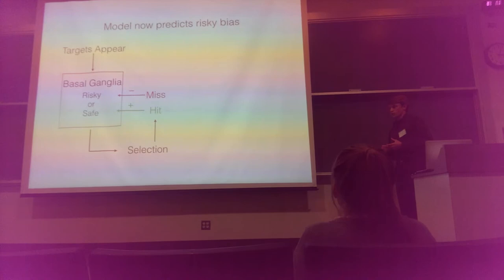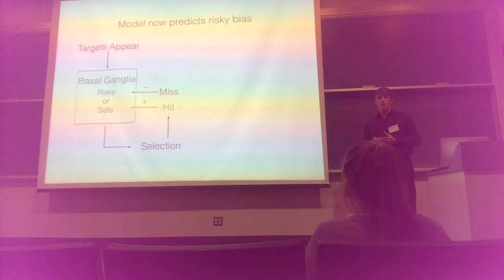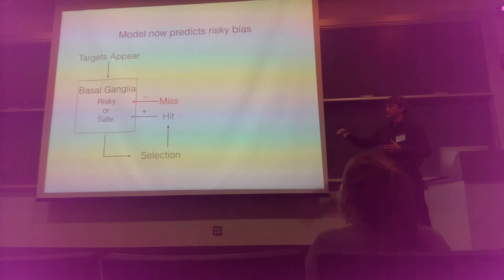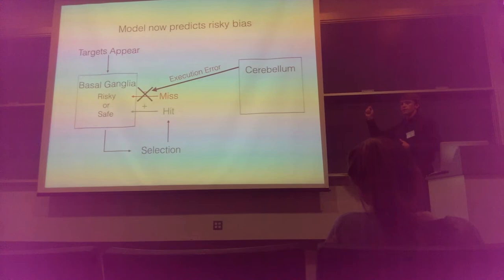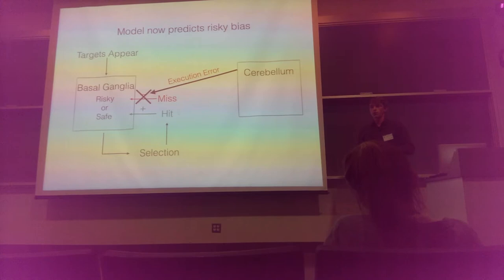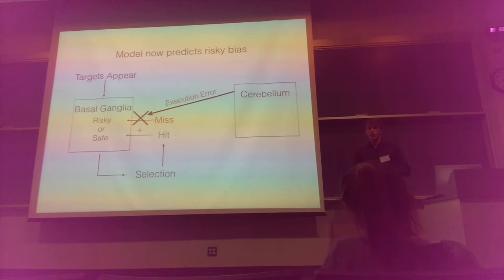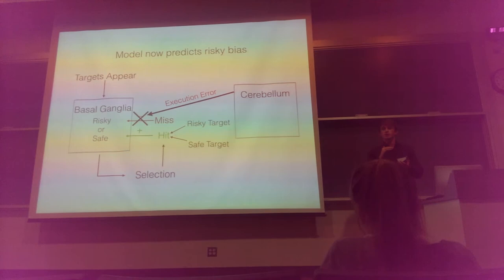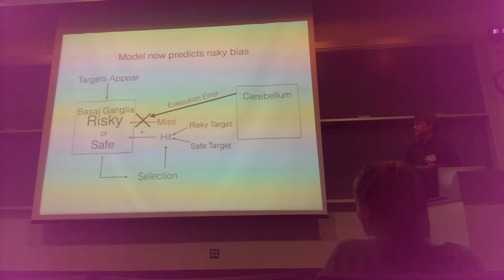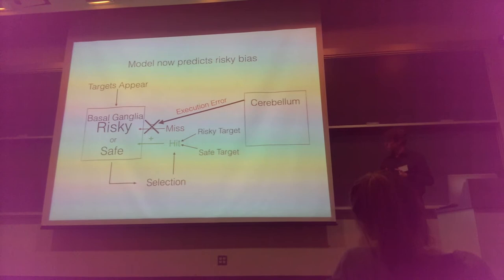Running this new task through the model: the selection system works largely the same — targets appear, you select risky or safe, and you can get positive reinforcement on a hit or negative reinforcement on a miss. But now, according to our hypothesis, the execution system sends over that execution error. So any time you have a miss trial, the execution error stops that negative reinforcement — you're no longer punishing your selection every time you don't get points when reaching to a target. Now comparing safe versus risky target via the positive reinforcement pathway only: the safe target gives lower-value points, while the risky target gives much higher-value points. So we expect the risky target to be much more positively reinforced, and the model now predicts that people will choose the risky target more on average — flipping their bias.